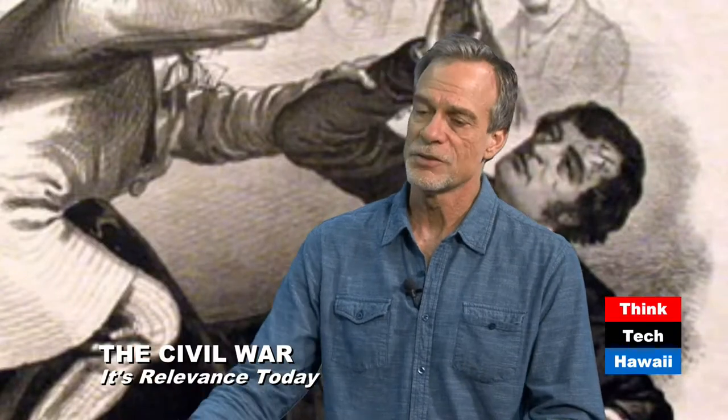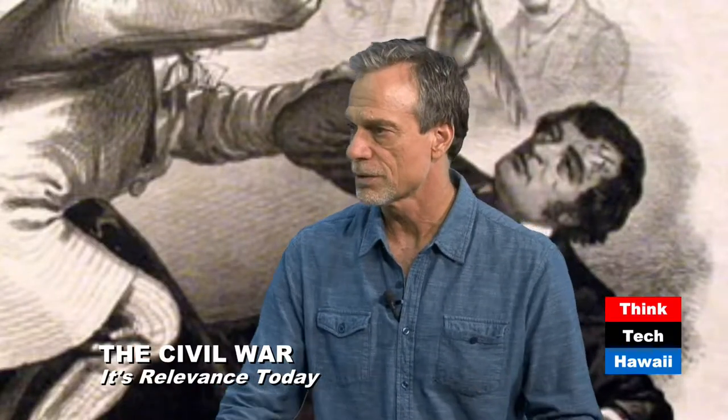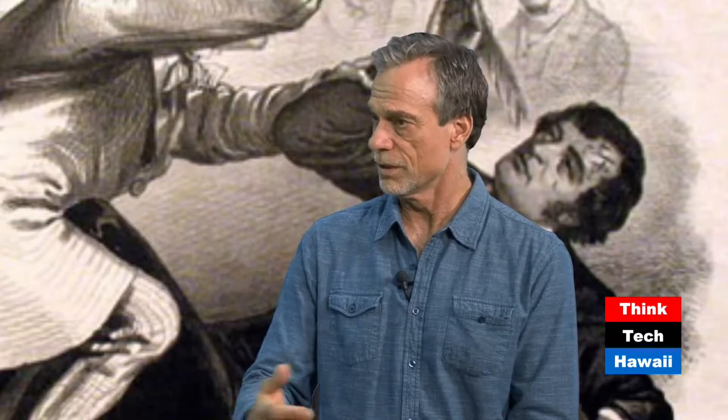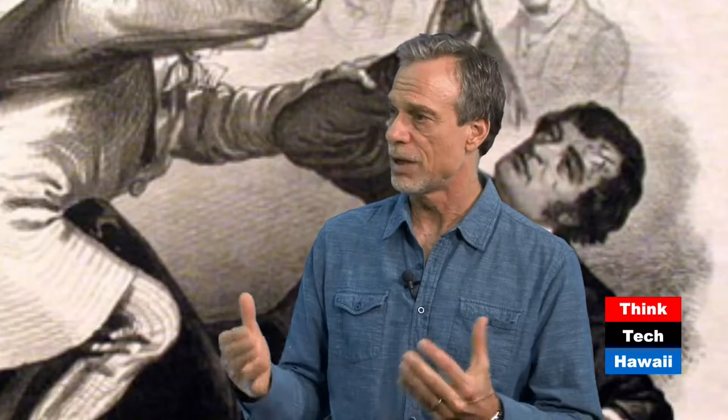Why did slavery become such a controversial issue? It had existed for hundreds of years before that. Why now? You could look to the Enlightenment — a time period in which European intellectuals said freedom and liberty are sacred concepts, reflected in the American Declaration of Independence. A lot of things assumed to be okay in 1500 or 1600 were absolutely not okay by 1700 and 1800 because of this idea about the equality and liberty of humans.